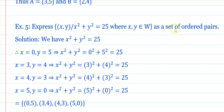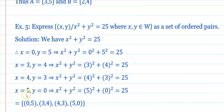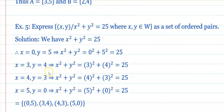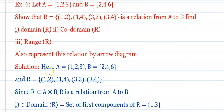Question 5: Express as a set of ordered pairs: {(x, y) : x² + y² = 25, x, y ∈ W}. When x=0, y=5; when x=3, y=4 (9+16=25); when x=4, y=3 (16+9=25); when x=5, y=0 (25+0=25). Therefore the set of ordered pairs is {(0,5),(3,4),(4,3),(5,0)}.